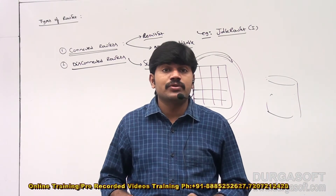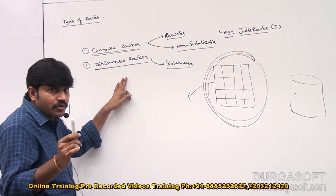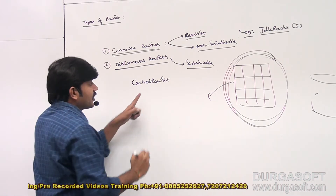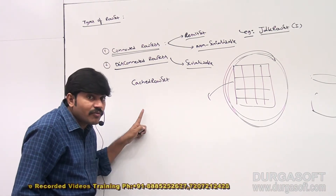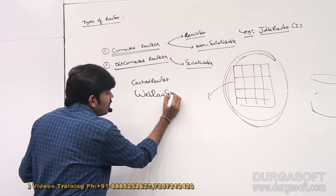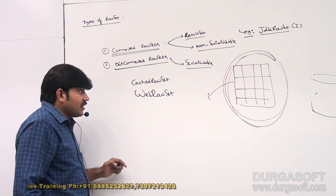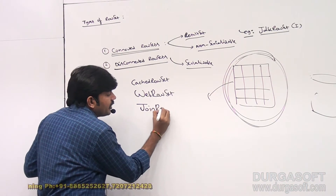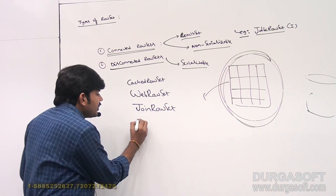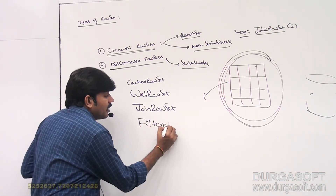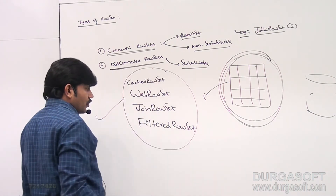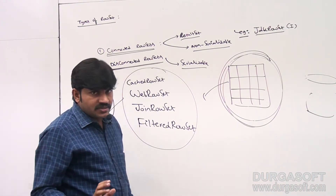Can you give an example for disconnected RowSet? Take special care here. The examples are: CachedRowSet, WebRowSet, JoinRowSet, and FilteredRowSet. All these are disconnected RowSets.